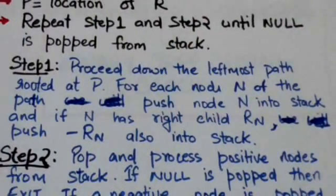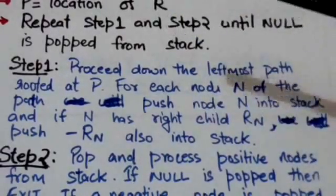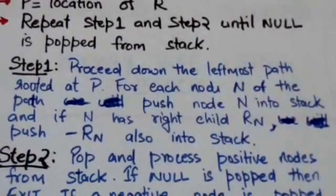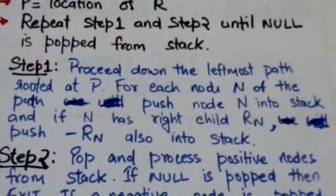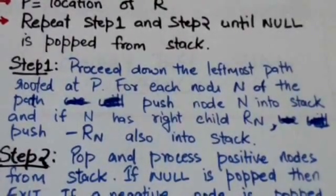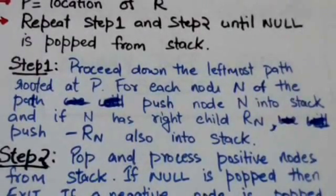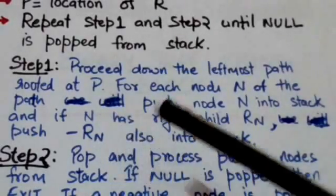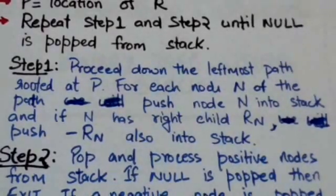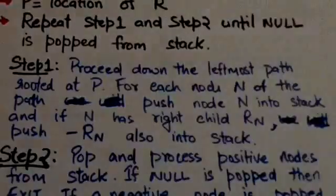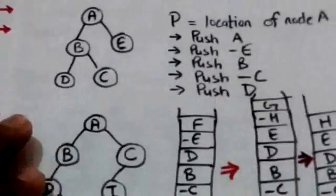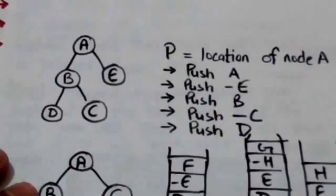In step 1, we will proceed down the leftmost path rooted at P. For each node N of the path, we will push node N into the stack, and if node N has a right child RN, then we will also push minus RN into the stack. Now see what happens in this stack — suppose this is the binary tree T.